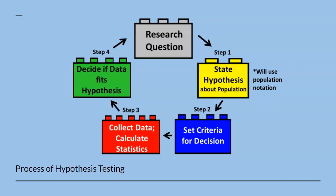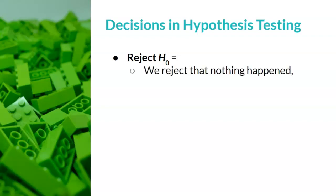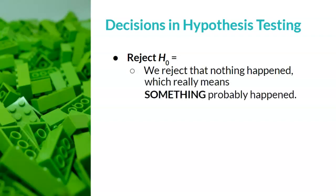We will reject the null hypothesis, or we will fail to reject the null hypothesis. There are two possible decisions that a researcher can make. The first possible decision is to reject the null hypothesis. Recall that the null hypothesis means that we're predicting that nothing will happen. So if we reject the null hypothesis, this is saying that we reject that nothing happened, which really means something probably happened. This statement is kind of like a double negative, where the two negatives — in this case reject and nothing — make a positive, and that something probably happened.